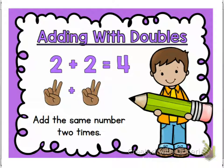The next one is when we're adding with doubles, and we talked about this in a few lessons back. So for 2 plus 2 equals 4, we know that we add the same number two times.